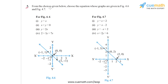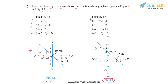Question 5 says that from the choices given below, choose the equations whose graphs are given in figures 4.6 and 4.7. We have a graph in 4.6 and a graph in 4.7. For 4.6, we are given four options of linear equations and we have to choose which one corresponds to that graph. Similarly, for 4.7, we are given four options and we have to choose which of those four equations corresponds to that graph.